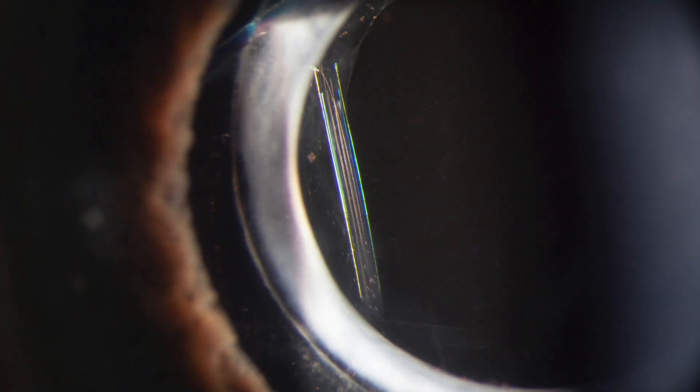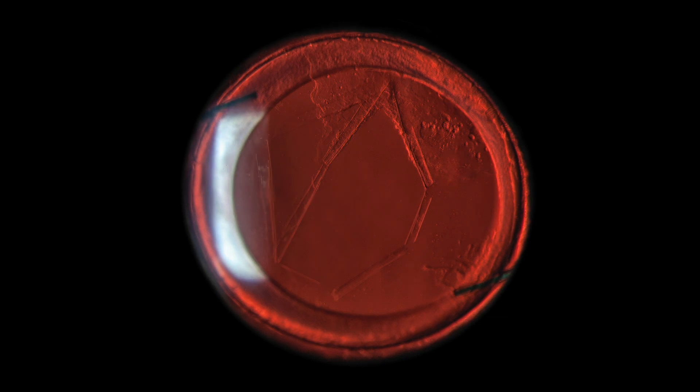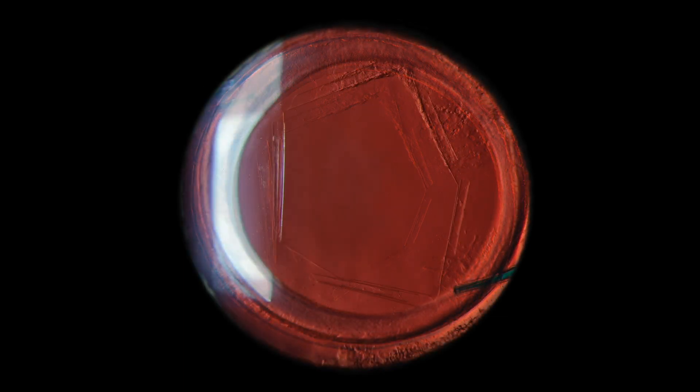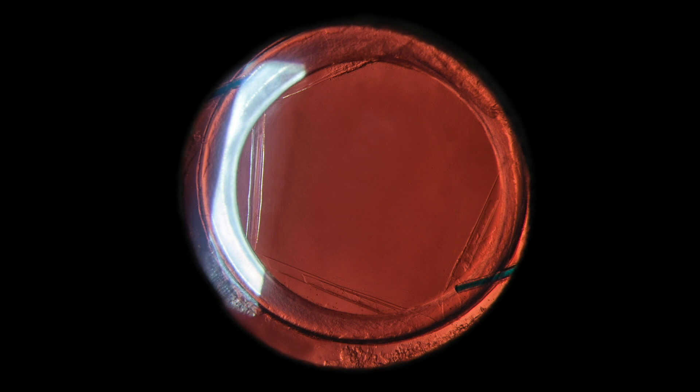This will result in clean and perfectly curled capsule edges. Assuming a perfectly sized rhexis without the risk of a vitreous prolapse into the anterior chamber, I try to achieve a posterior capsule opening between 5 and 6 millimeters.